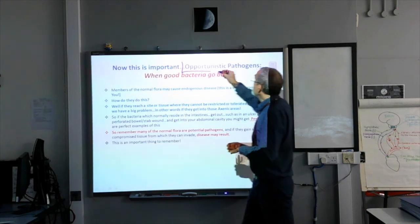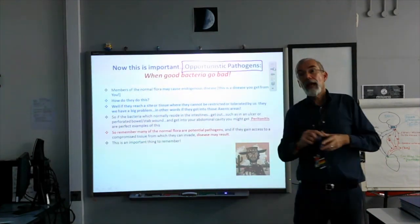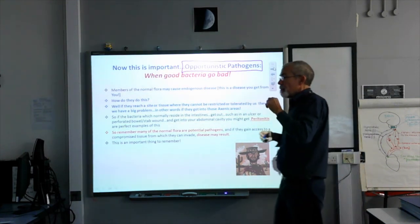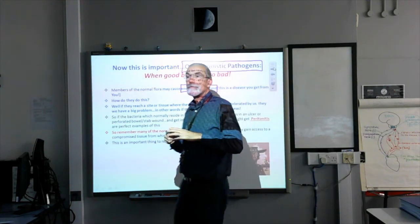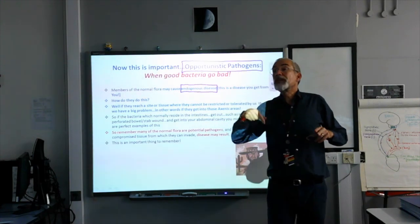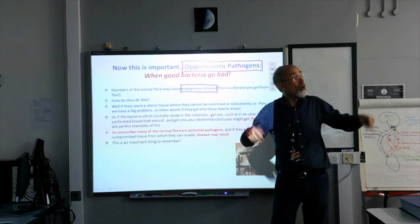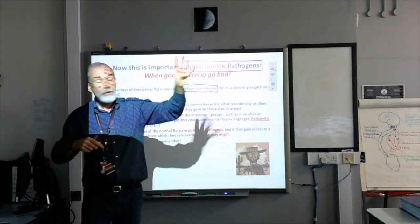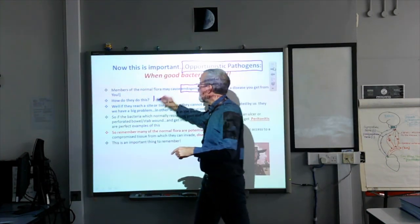Now — did I say to look out for that phrase opportunistic pathogen, also known as when a good bacteria goes bad? This is an important term: endogenous disease. An endogenous disease is simply a disease that you catch from yourself. These are not diseases that get in through the four portals of entry — these are diseases that you catch from yourself.